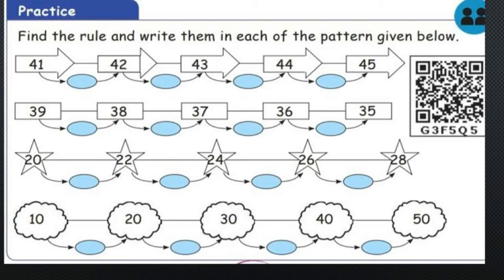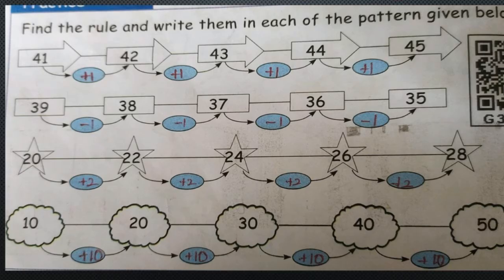Find the rule and write them in each of the patterns given below. First one: 41, 42. The difference is 1 — it is plus 1. So 41 plus 1 is 42, 42 plus 1 is 43, 43 plus 1 is 44, and 44 plus 1 is 45.